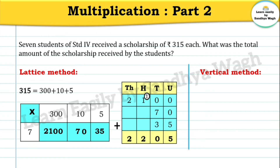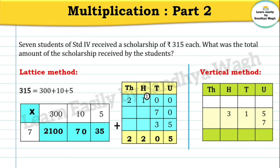Now let us solve this same word problem using the vertical method of multiplication. First, we multiply 5 units by 7: seven fives are 35. We can't write 35 in the units place, so we write 5 in the units place and carry 3 to the tens place, because in 35 we have 3 tens and 5 units. Now let us multiply 1 by 7: seven ones are 7.